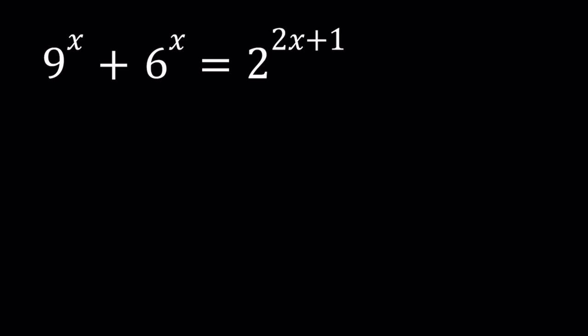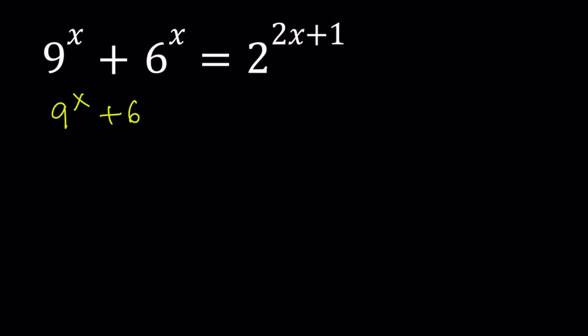We've done similar problems before. If I find them, I'll link them down below. So, how do we solve this problem? We're going to use a very common strategy for these kinds of equations. But let's go ahead and simplify 2 to the power 2x plus 1 first. I'm going to write it as 9 to the x plus 6 to the x equals 2 to the power 2x times 2. And now this can be written as 4 to the power x. So we can write it as 2 times 4 to the power x. Great, we simplified it as much as we can.